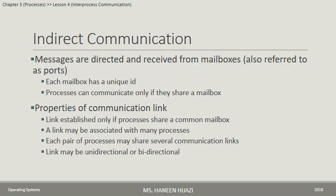Indirect Communication: Messages are sent and received through a Mailbox. Every mailbox has a unique ID, and processes can communicate only when they share a common mailbox. Link properties in indirect communication: (1) A link is established only if processes share a common mailbox. (2) A single link can connect more than two processes. (3) Between any two processes, more than one link is possible. (4) A link can be unidirectional or bidirectional. Each link corresponds to one mailbox.